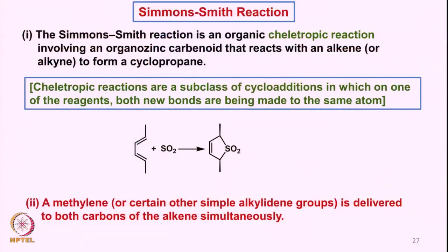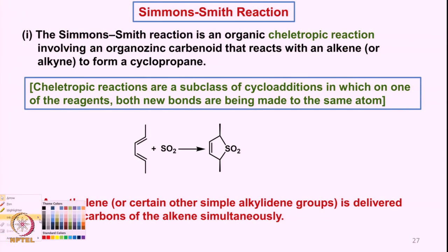We will now move into the final topic of our course: the Simmons-Smith reaction. This is a very interesting carbon-carbon bond forming reaction. It is called an organic cheletropic reaction involving organozinc carbenoids. It is not a free carbene, but a carbenoid that reacts with an alkene to form cyclopropane.